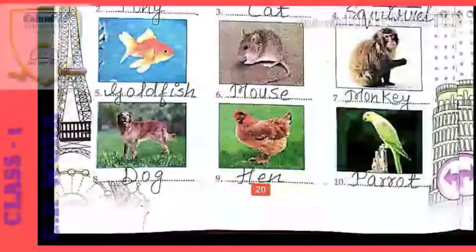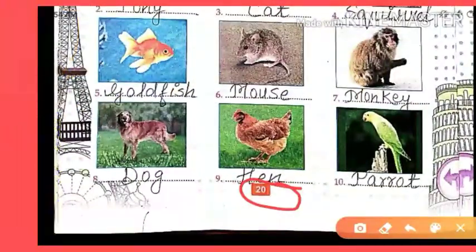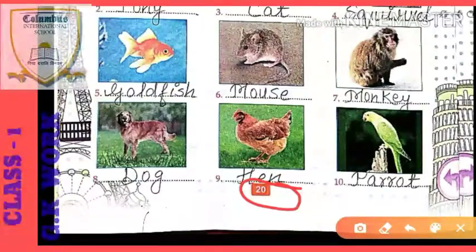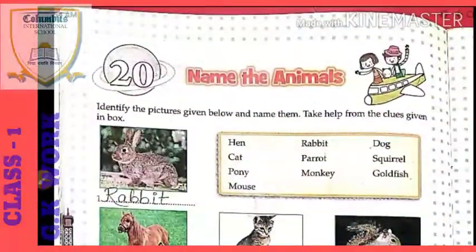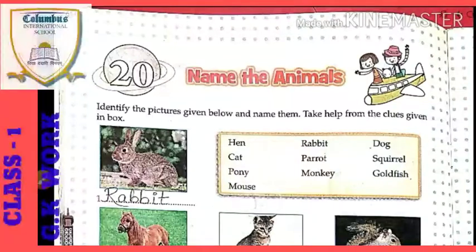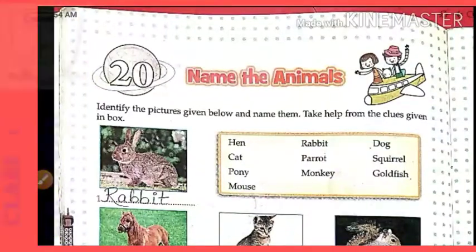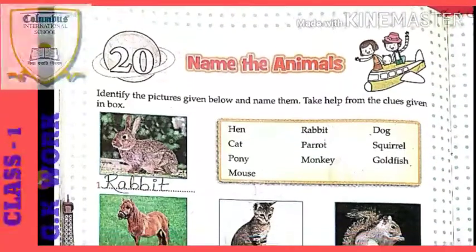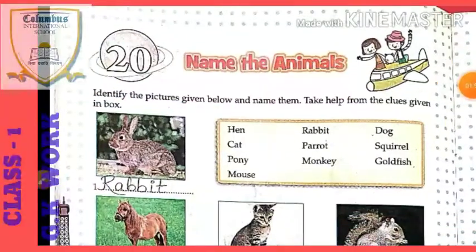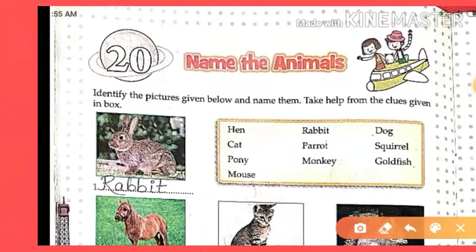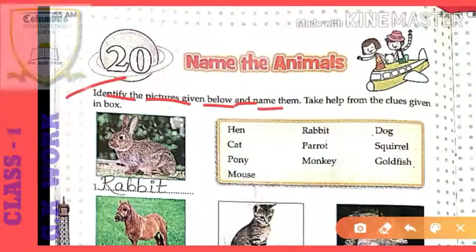Let's also check the page number — the page number is 20. All of you take out your GK book, open it, and let's start today's work. Open page number 20 with chapter 20. So let's start — identify the pictures given below.